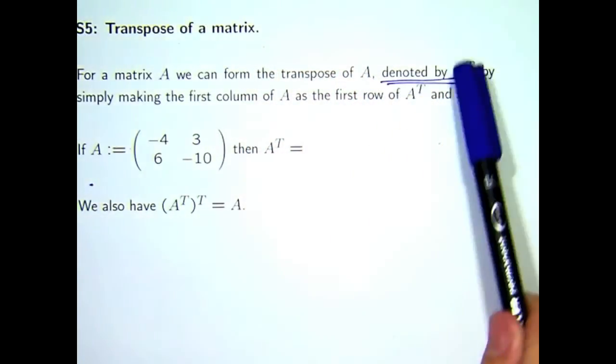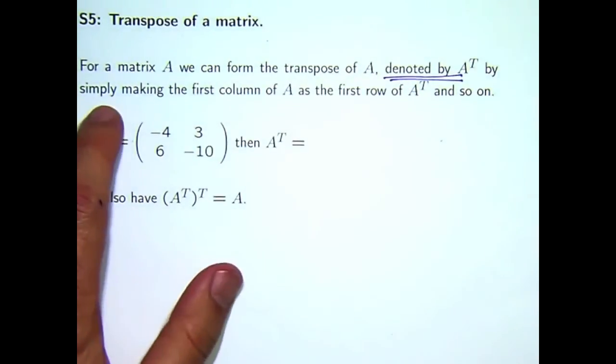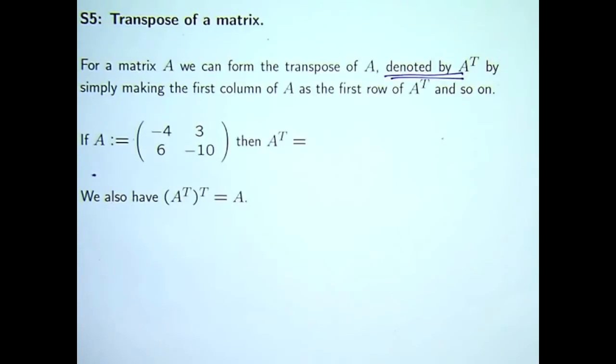The transpose of a matrix, denoted by A superscript T, is basically you're interchanging rows with columns to form a new matrix called the transpose.